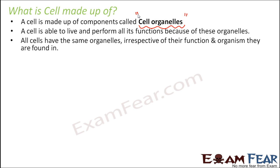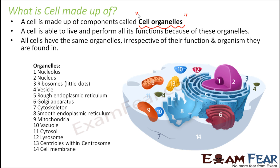All cells have the same organelles irrespective of their function and the organism they are found in. Cells are present in bacteria, in human beings, in plants — and in all of them the organelles are the same. However, there are little differences between a plant cell and an animal cell. All animal cells will have the same cell organelles; similarly, all plant cells will have the same cell organelles.